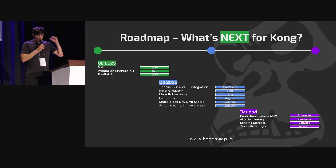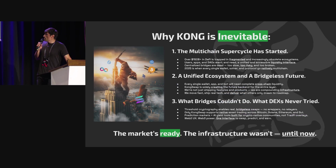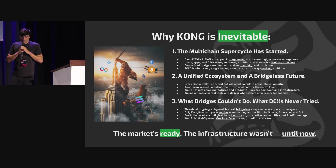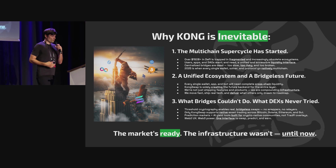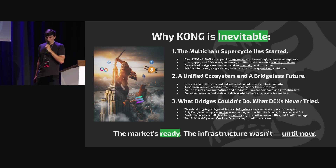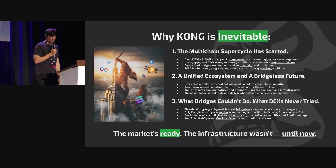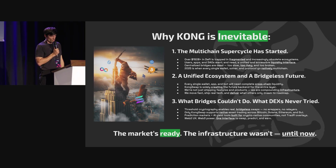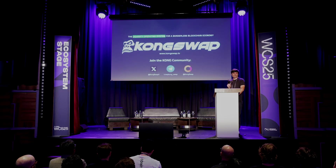The roadmap is simply more chains, more integrations, more TVL. Why is Kong inevitable? The multi-chain cycle has started — everybody's been trying to do it, but we've made it a reality. We provide a unified ecosystem for the bridgeless future, doing what bridges couldn't and what others wouldn't even try. The multi-chain future is ready and good to go.